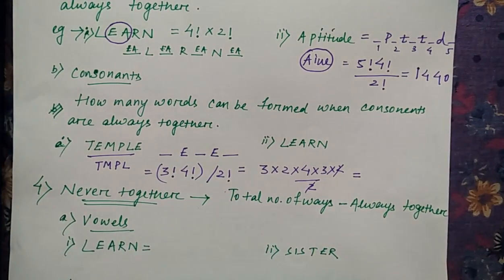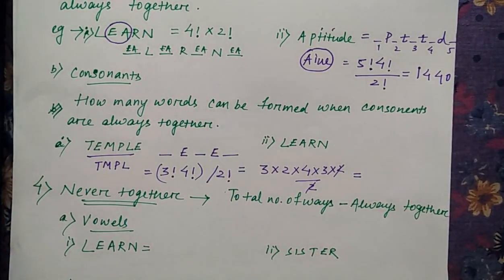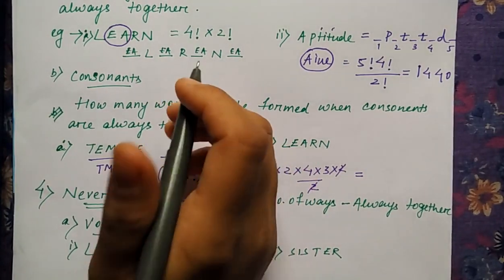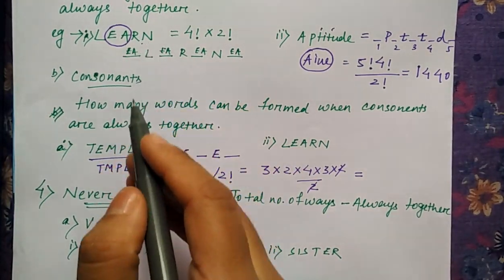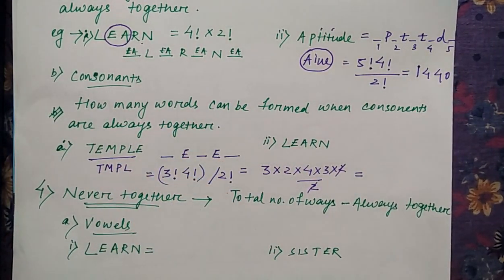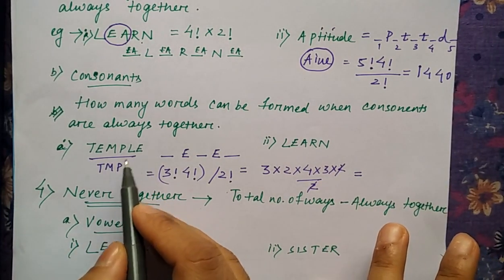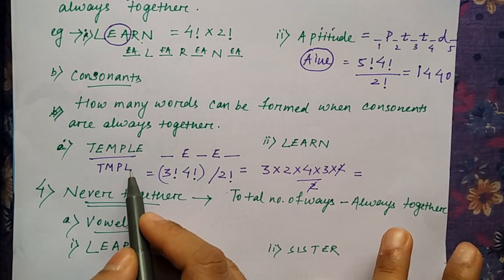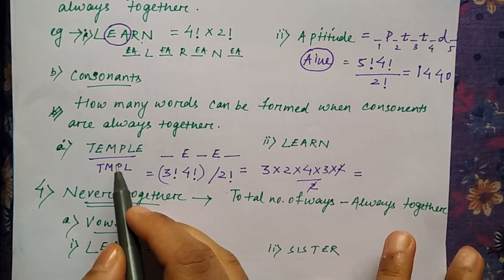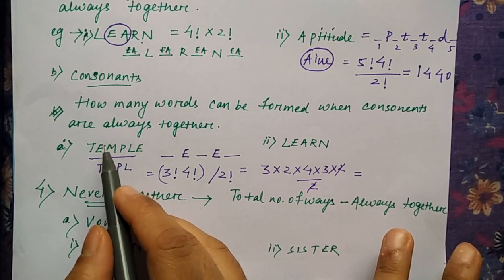We'll see now for consonant. For consonant the same way like how we used to keep all the vowels together, here we'll use to take the consonant letter alphabet together. So in this word temple what are the consonant alphabet? TMPL. So you have to keep TMPL separate. So what are the left out word? Only E and T.